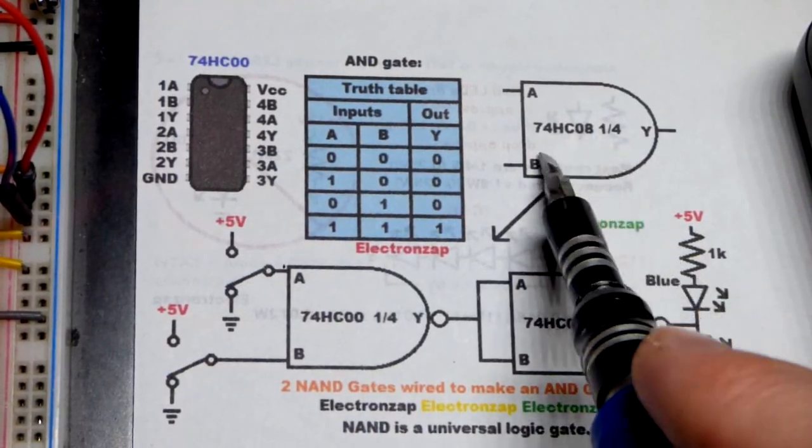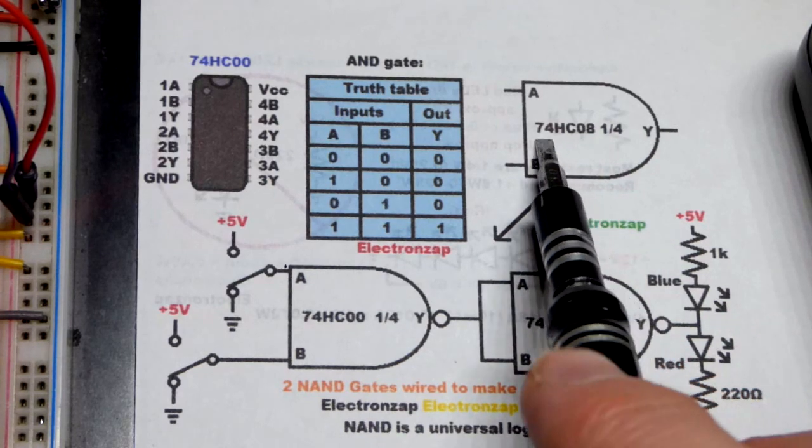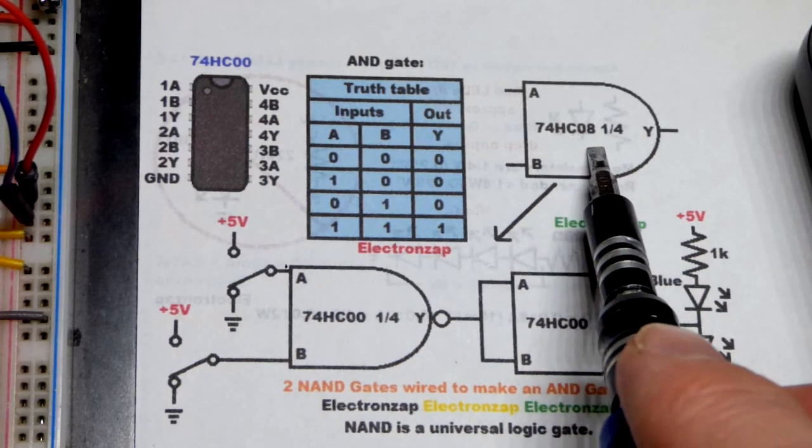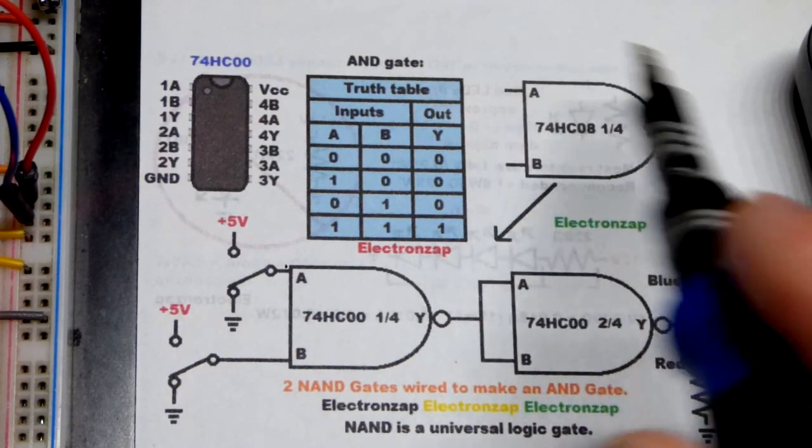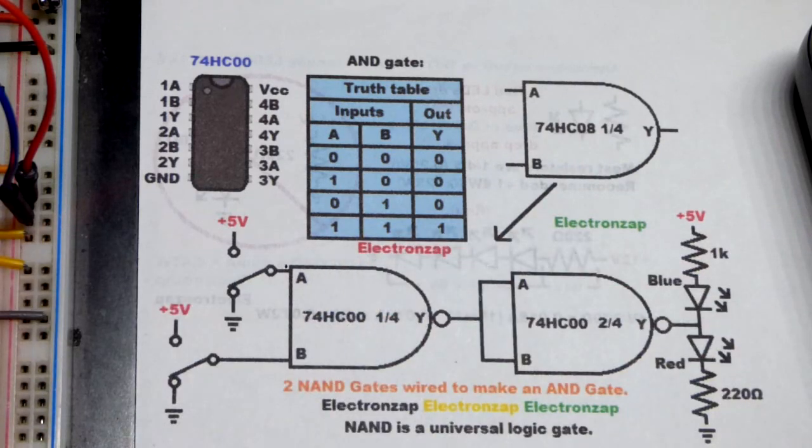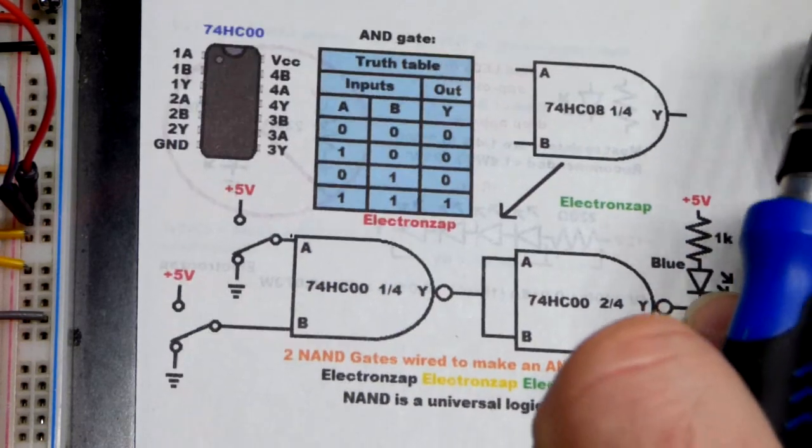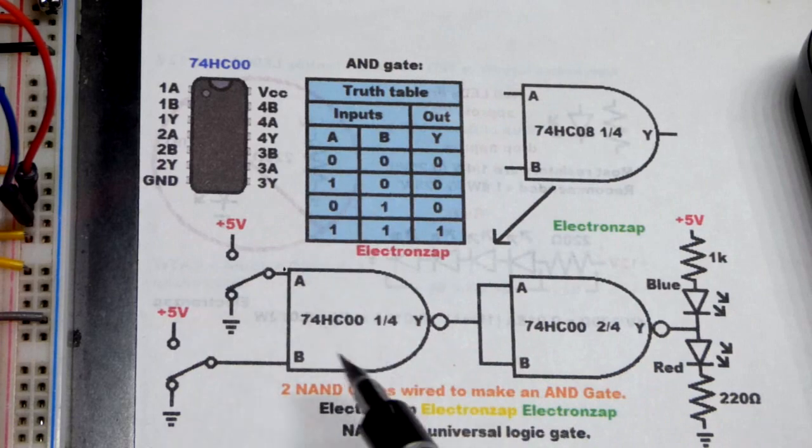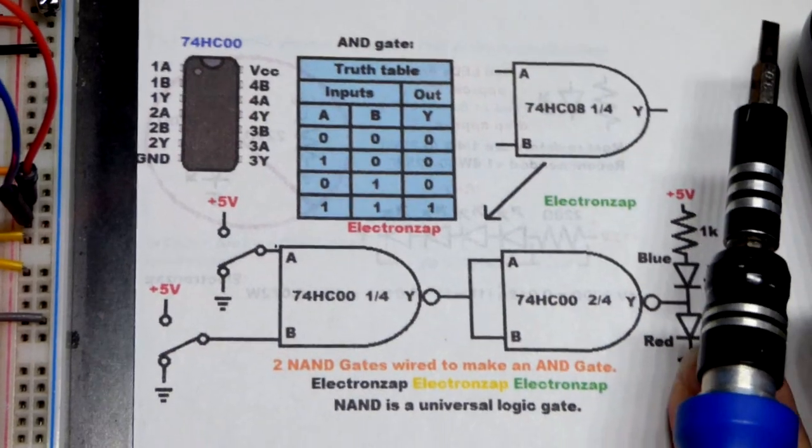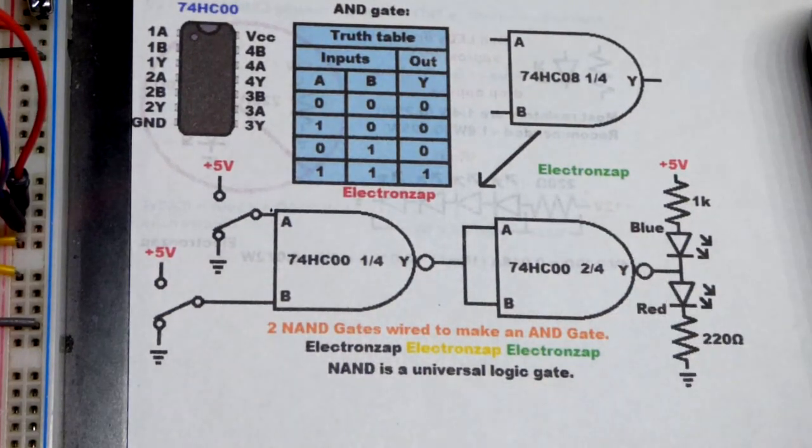So basically, if we come across a schematic diagram that calls for an AND gate, but for some reason we want to use the NAND gate version, the 74HC00 instead, we can simply do that with this circuit that you can see here.